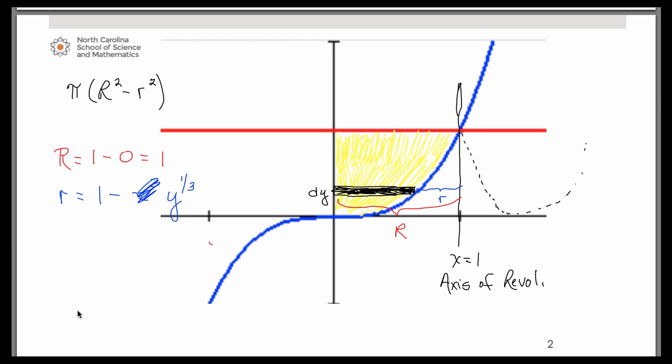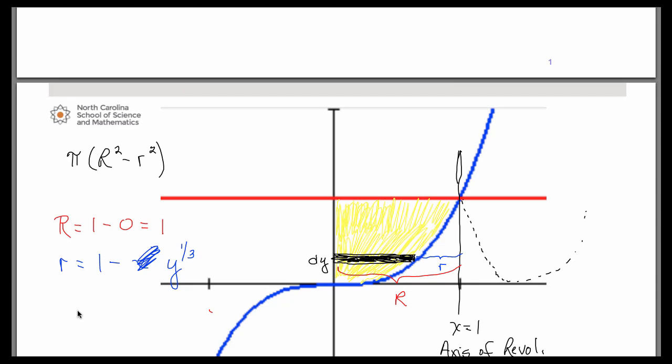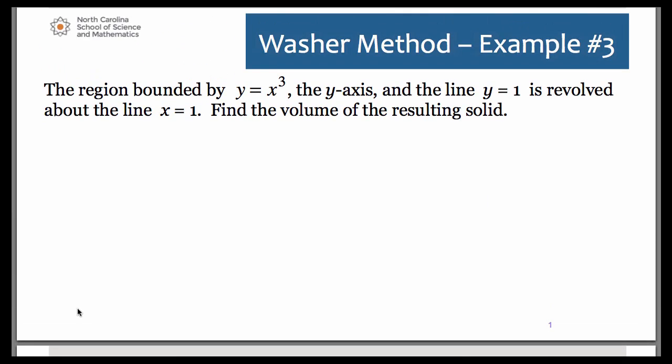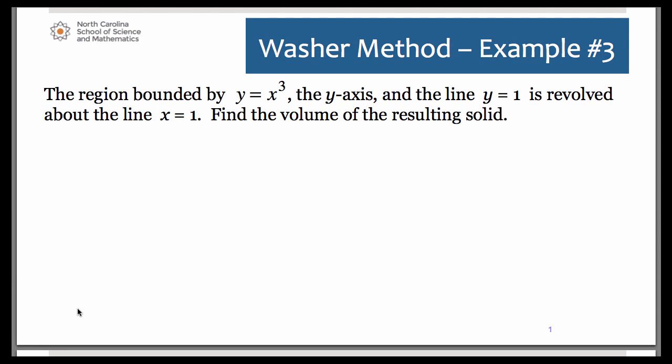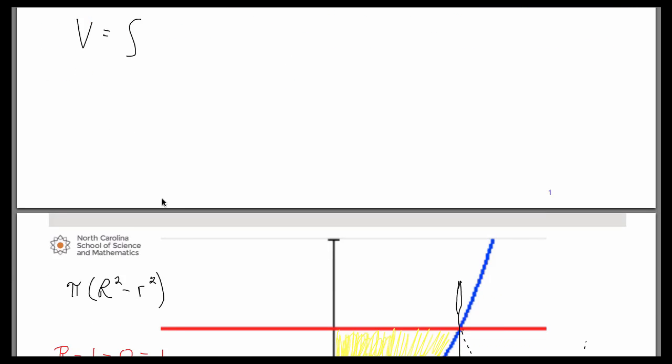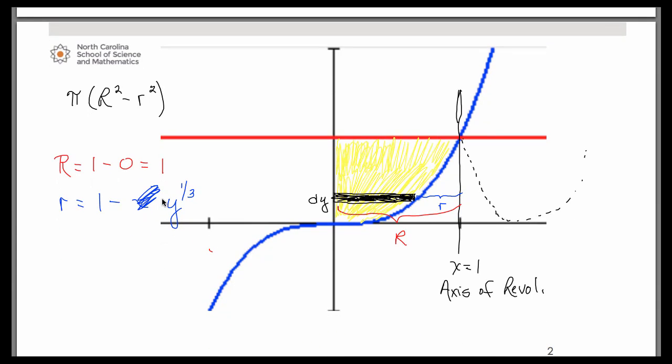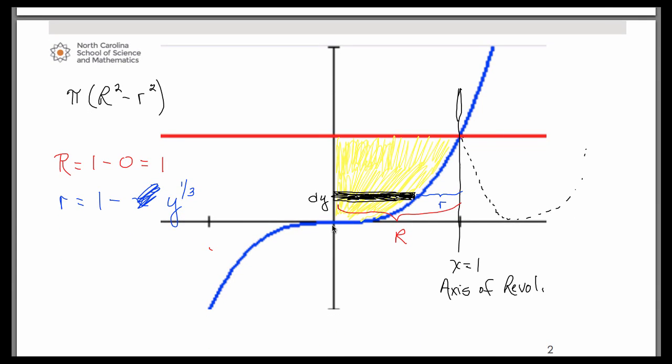So let's go back to the previous page and we'll go ahead and set it up. So our volume, since it was a dy problem, our limits of integration need to be y values. So let's take a look at the graph again. And our y values are going from 0 on the low end up to a positive 1.